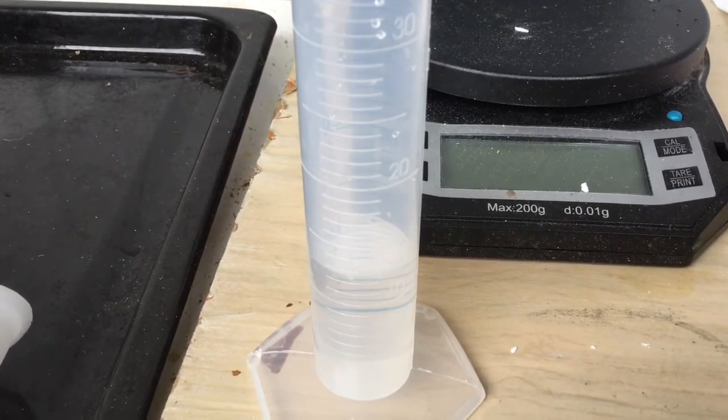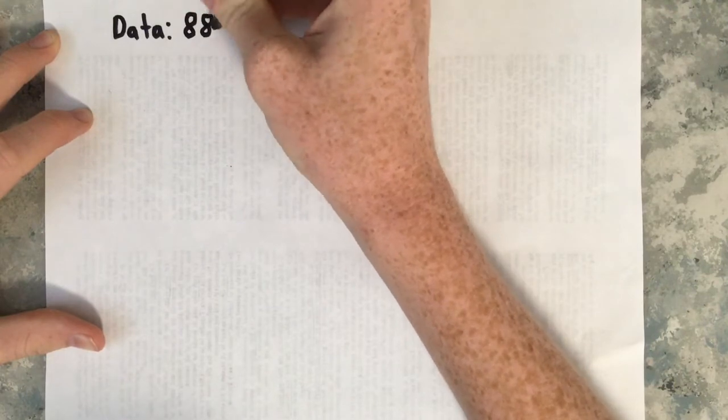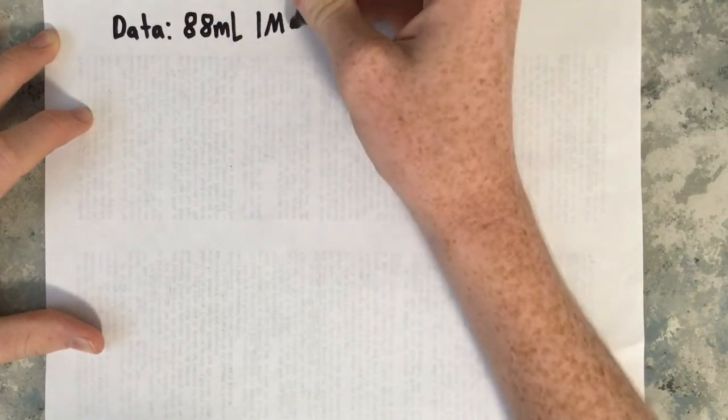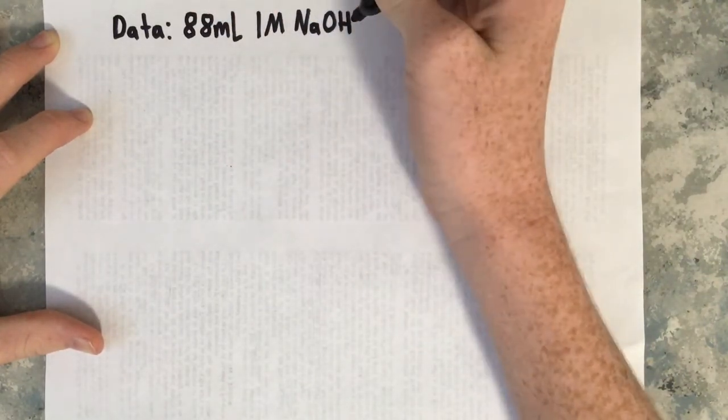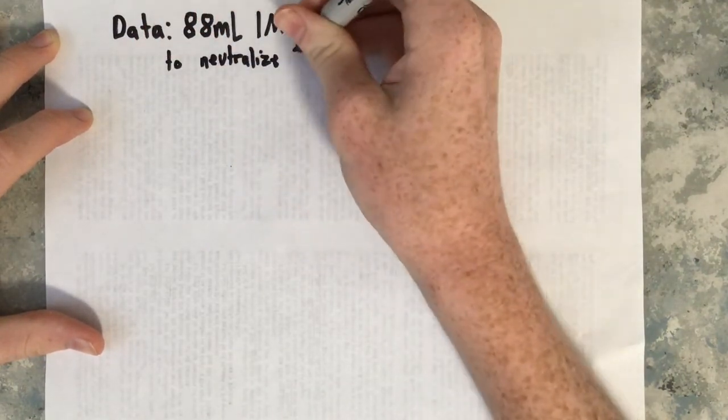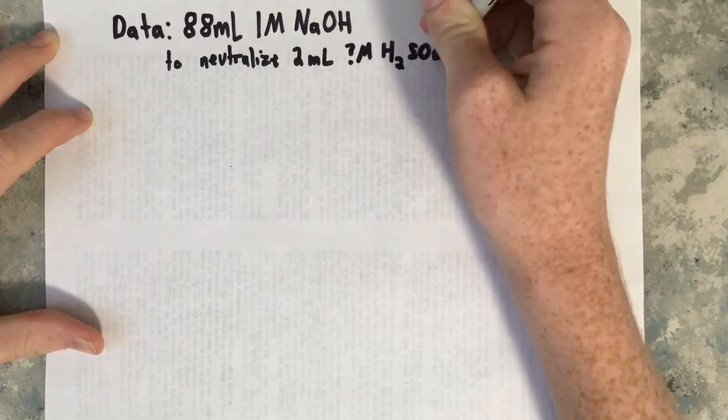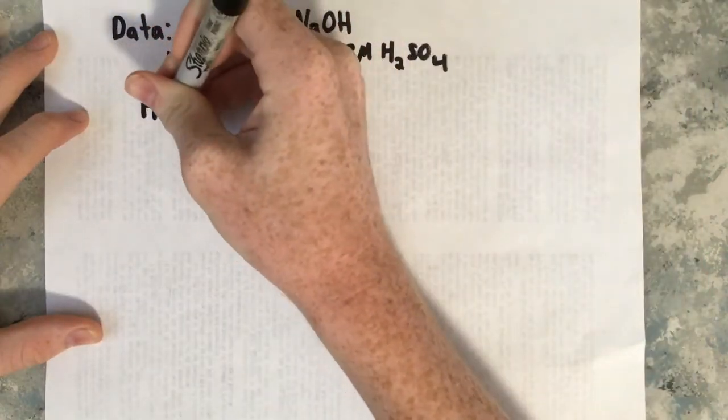Now that we did our experiment, let's figure out what the concentration of my sulfuric acid is with the data that we collected. We used 88 milliliters of one molar sodium hydroxide to neutralize the two milliliters of unknown concentration of sulfuric acid.